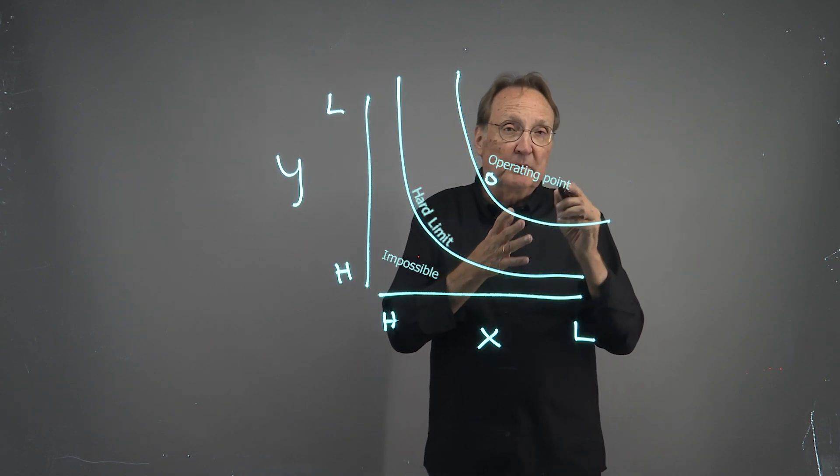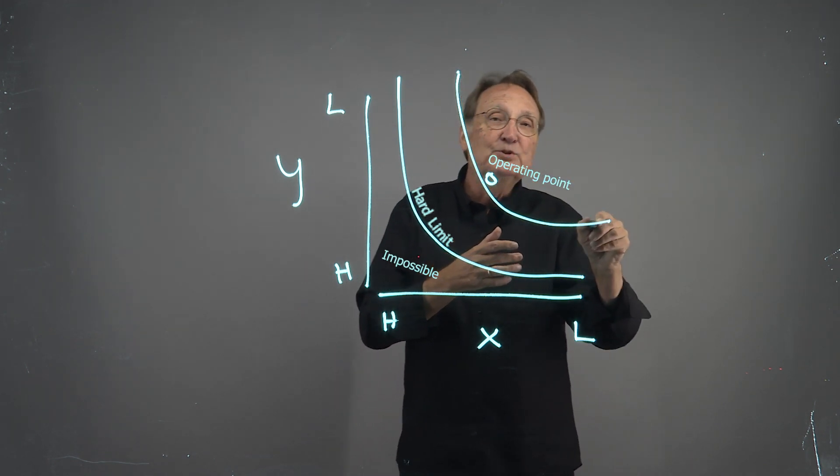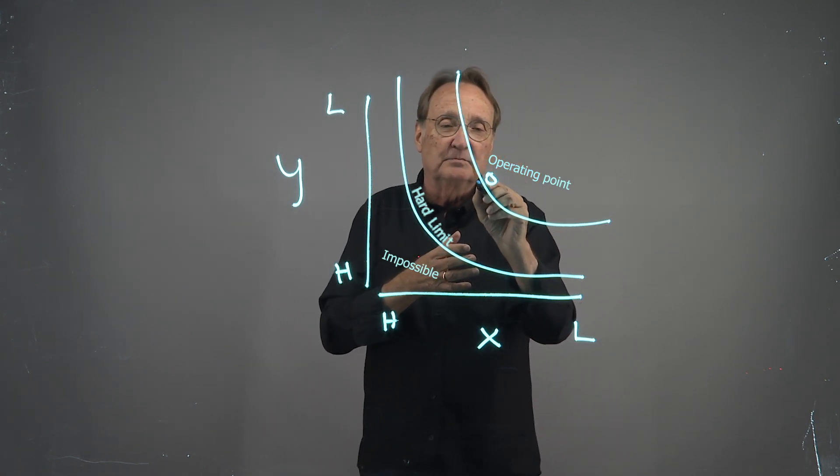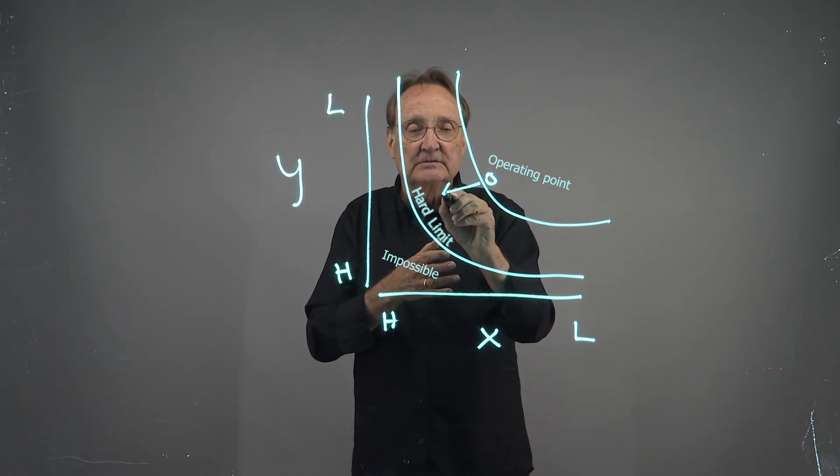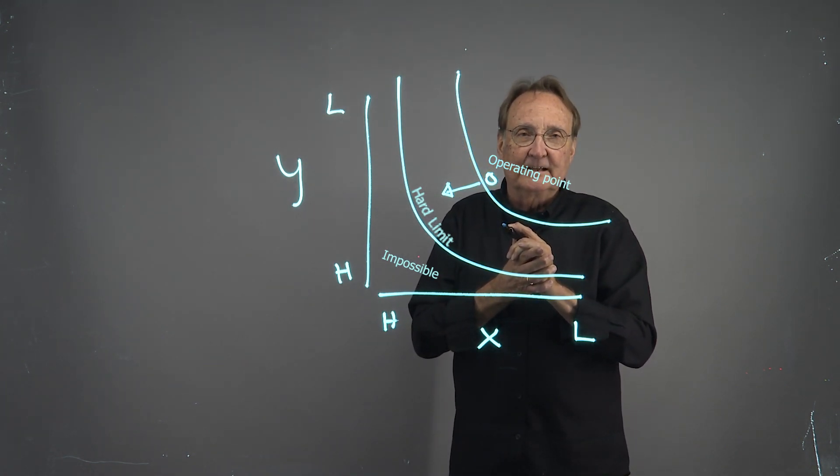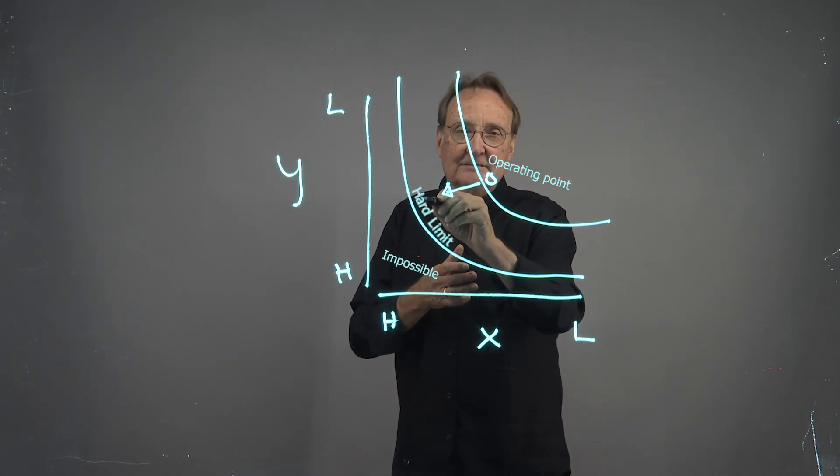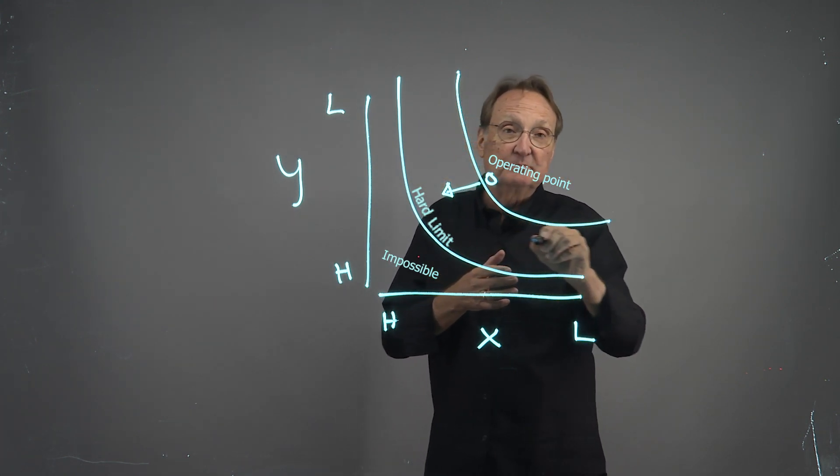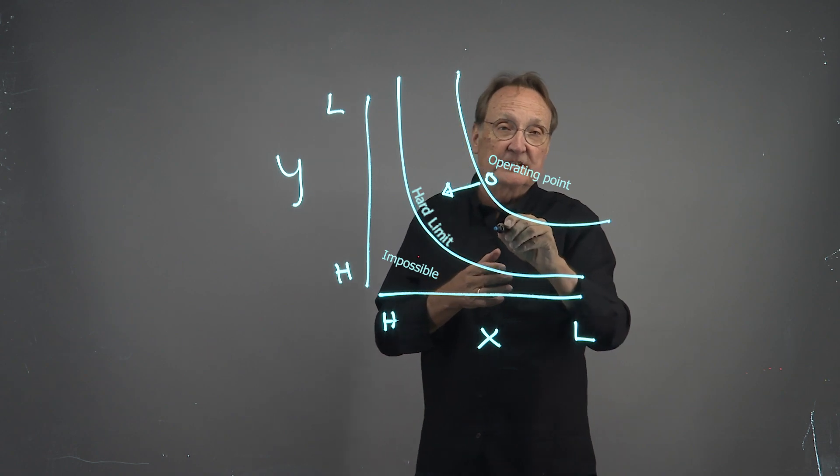But what we would also like is not just to move on a trade-off curve. We also would like to move closer to this hard limit. Can we get here and, in getting here, still have flexibility to adjust our position in the space?